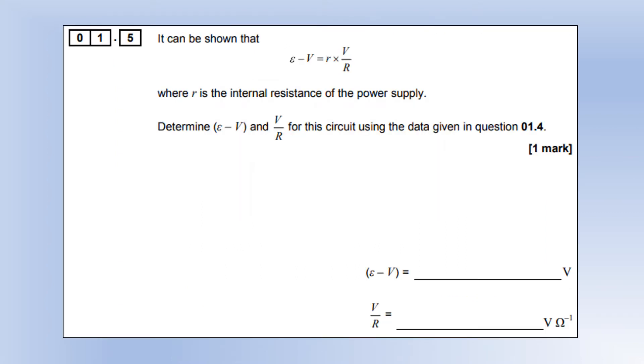It can be shown that the EMF minus the terminal voltage equals the internal resistance times the terminal voltage over the external resistance. Determine the two values of the circuit using the data we've been given. This would be the Y term, and this would be the X term.